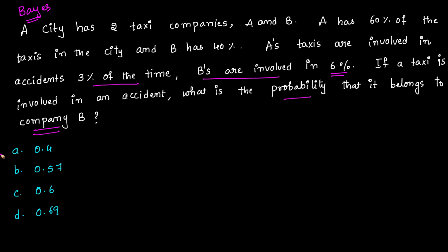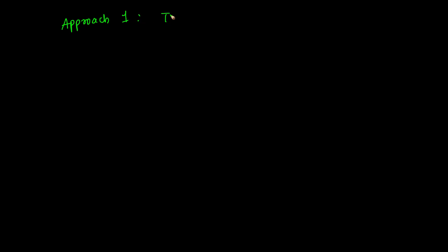Looking at this problem, we need to calculate the probability that the taxi belongs to company B given that it is involved in an accident. We can solve this in two approaches. The first is a tree-based approach.